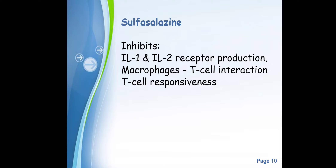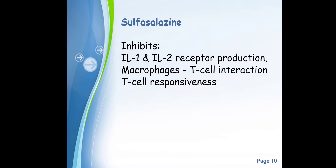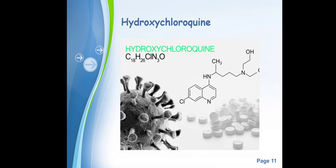Third is sulfasalazine. It inhibits interleukin-1 and interleukin-2 receptor production, and also macrophage-T cell interaction and T cell responsiveness. Importantly, sulfasalazine is not purely an immunosuppressant — it is an immunomodulator with anti-inflammatory properties. It is also used in ulcerative colitis. So it modulates immunity rather than suppressing it entirely.